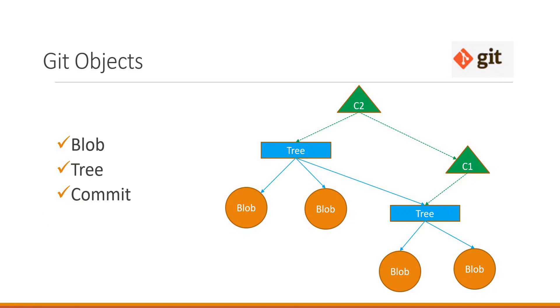In this video we are going to discuss about git objects. In git we have three important objects: a blob object, a tree object, and a commit object. Before explaining about these three objects, let us try to understand how git stores the files.